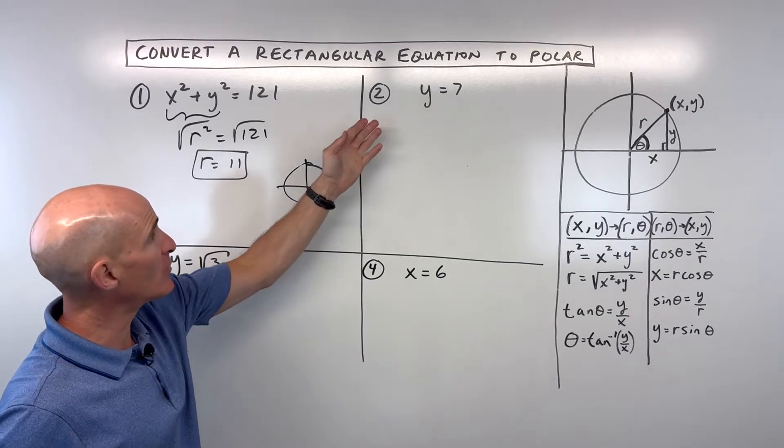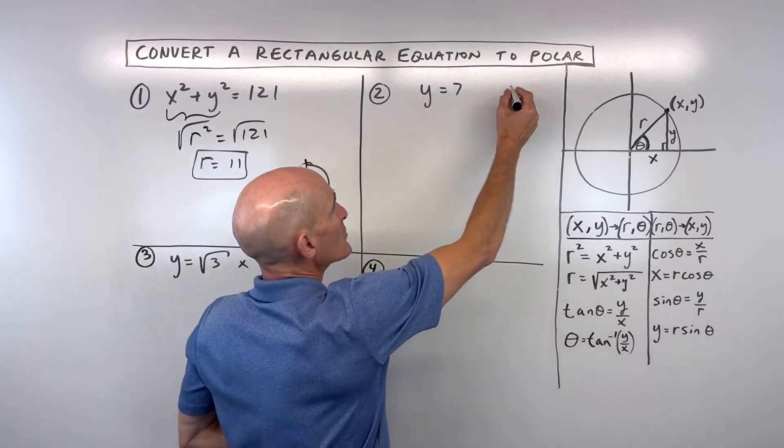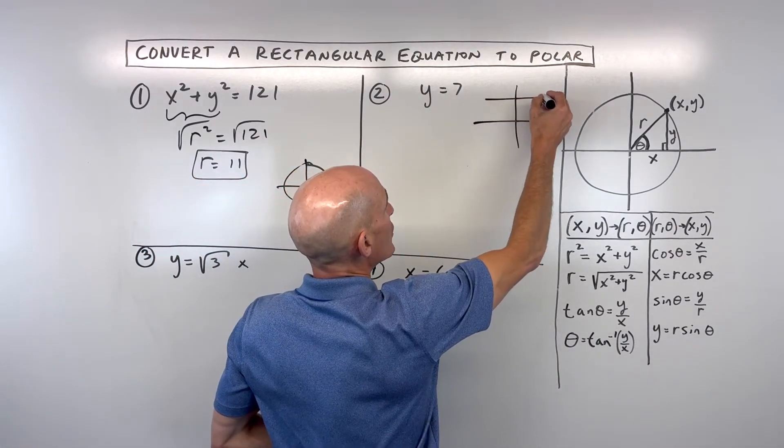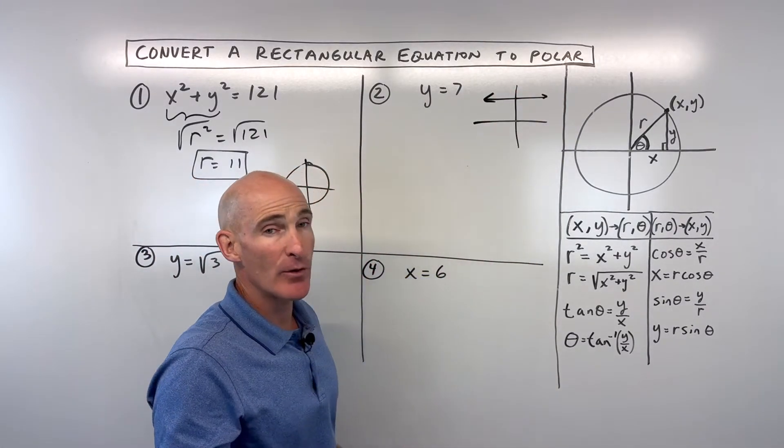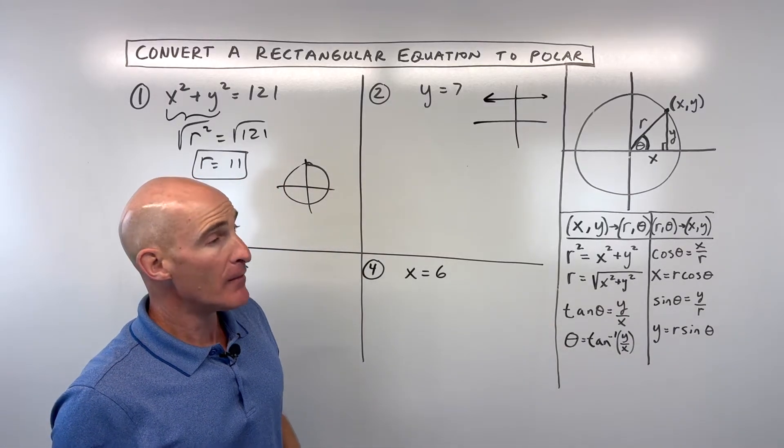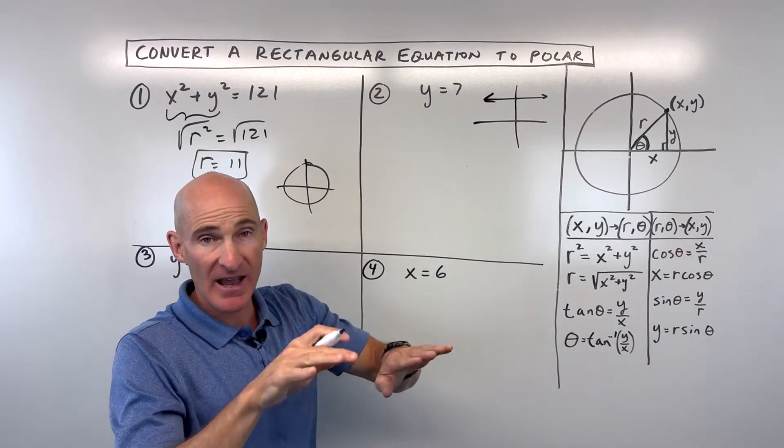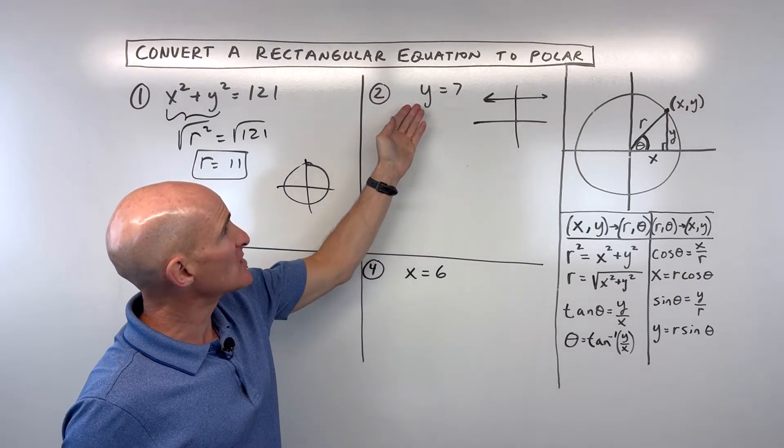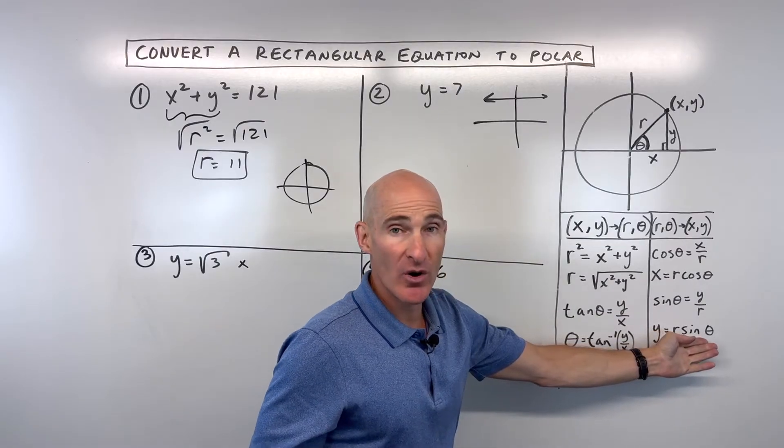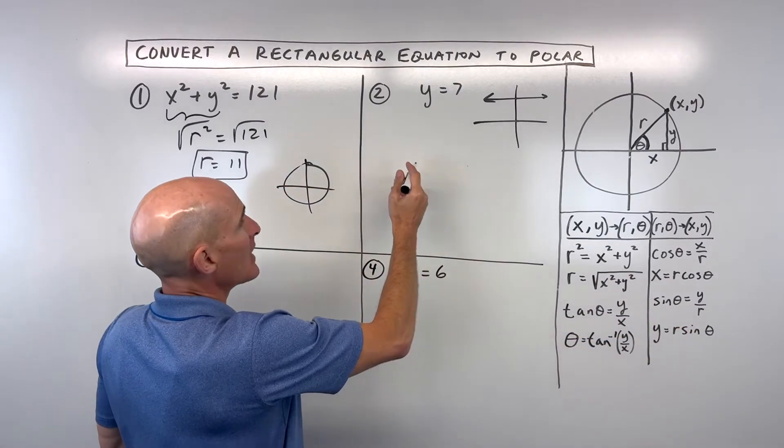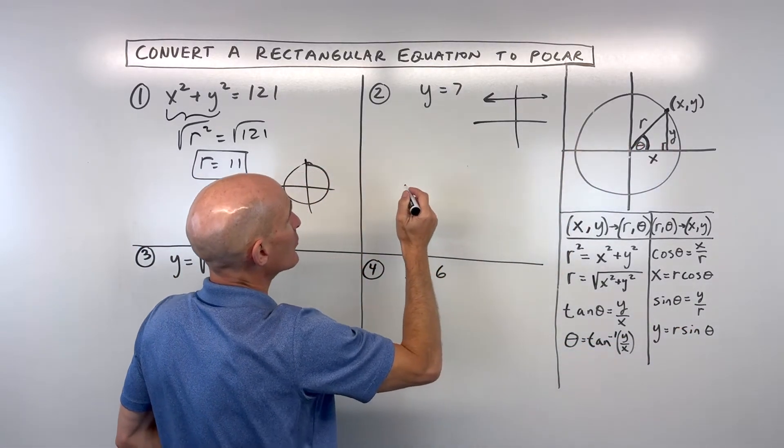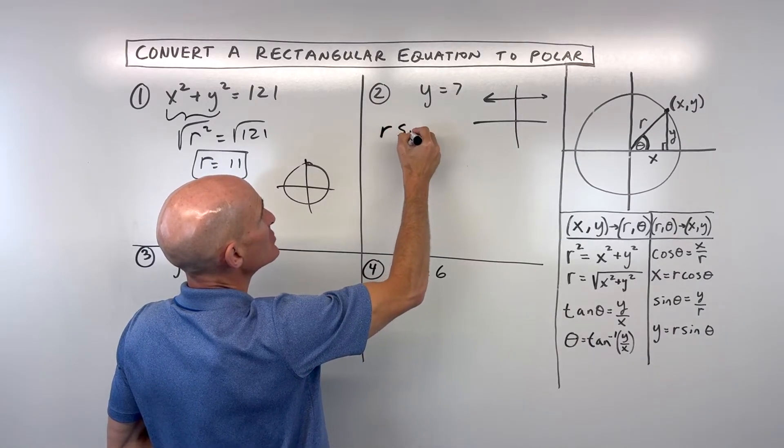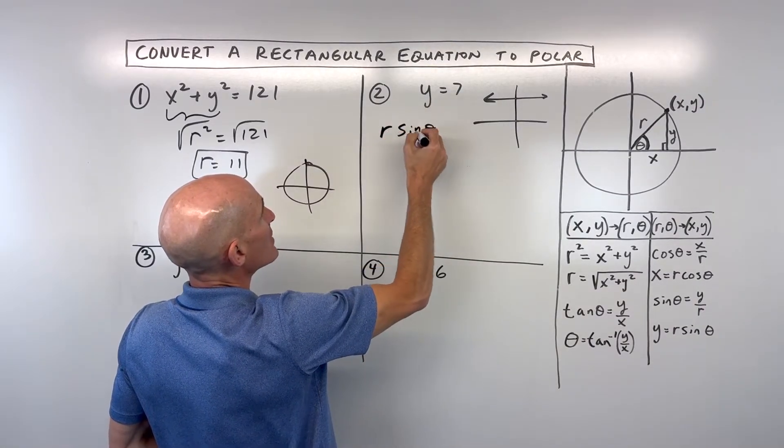Let's go to example number two now. Here we've got the line y equals 7. We know y equals 7 is just a horizontal line like that. But how do we write it in the polar form? Polar just means we're going to eliminate the x's and y's. We just want r's and theta's. And so what we can do here is we can say, well, I know that y is equal to r times the sine of theta. And we can see that from this triangle relationship here. I'm just going to make a substitution: y equals r sine theta.